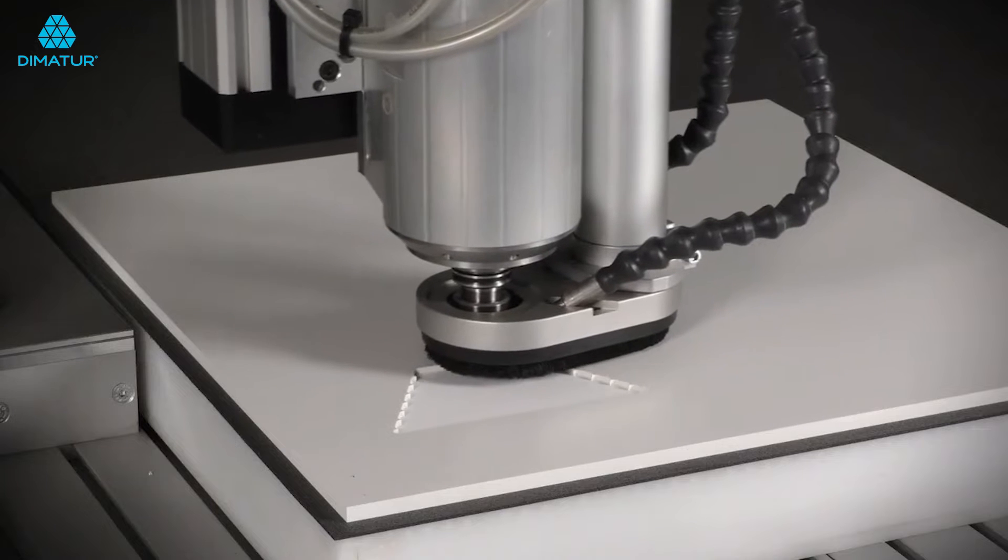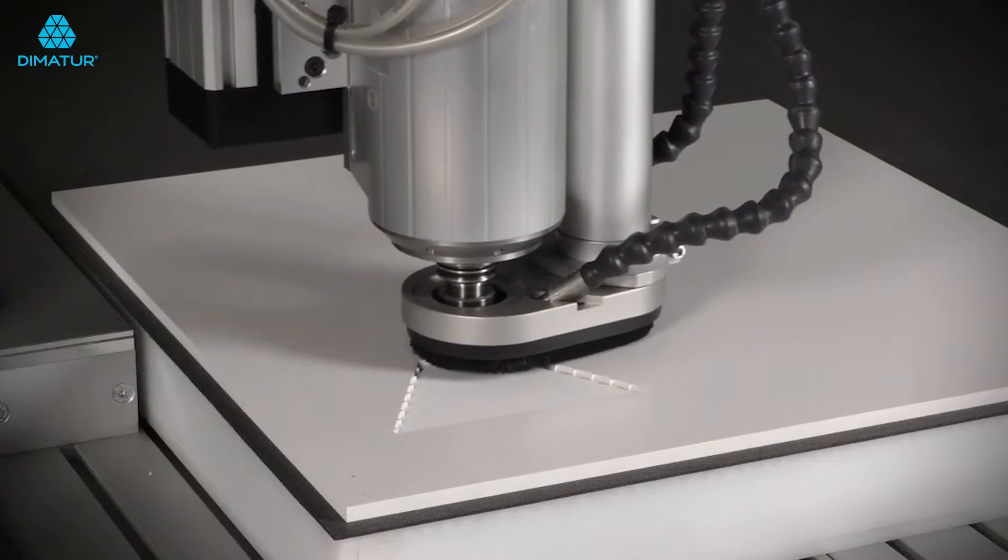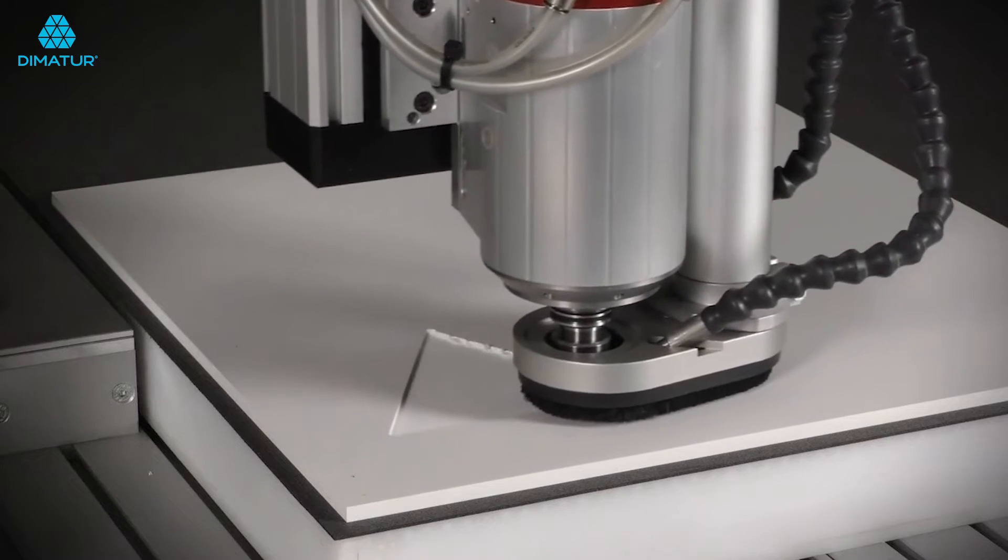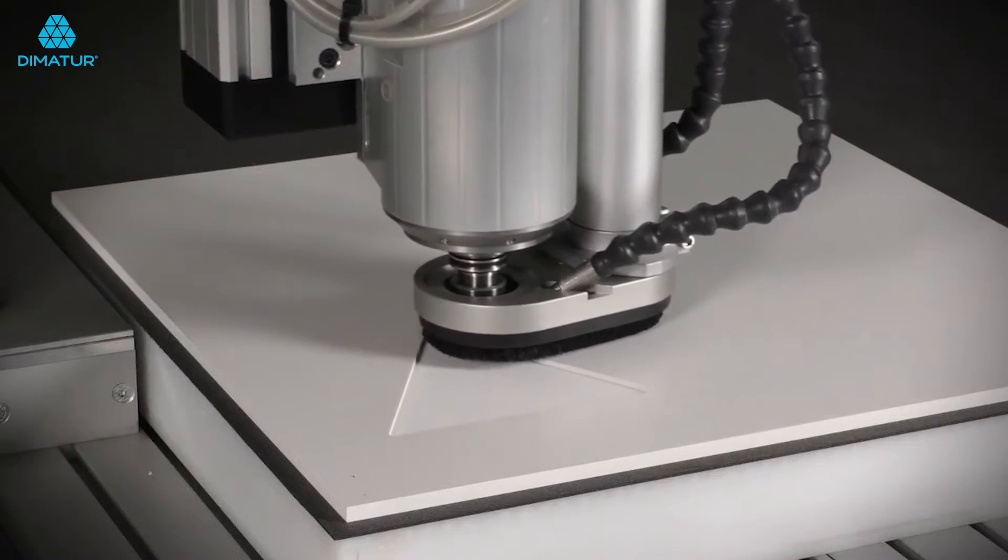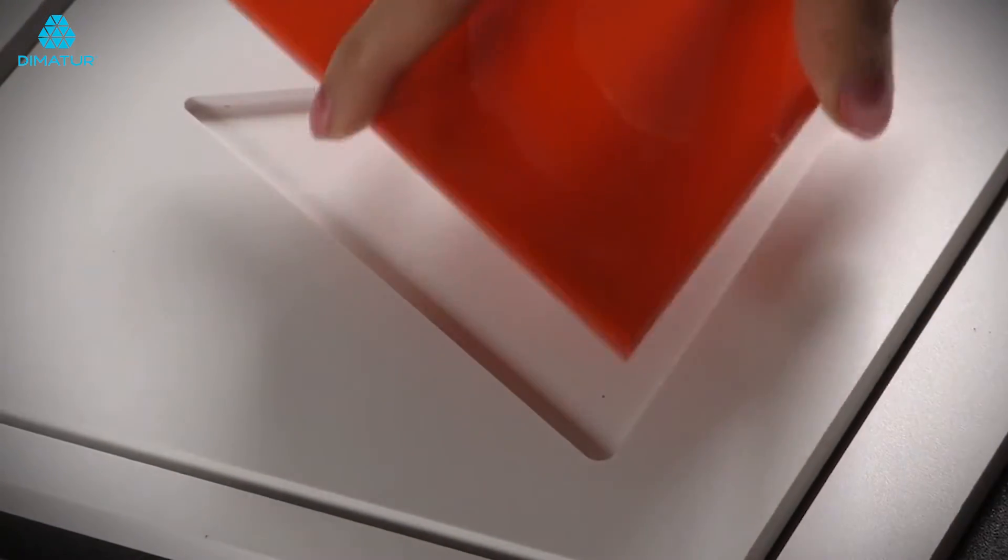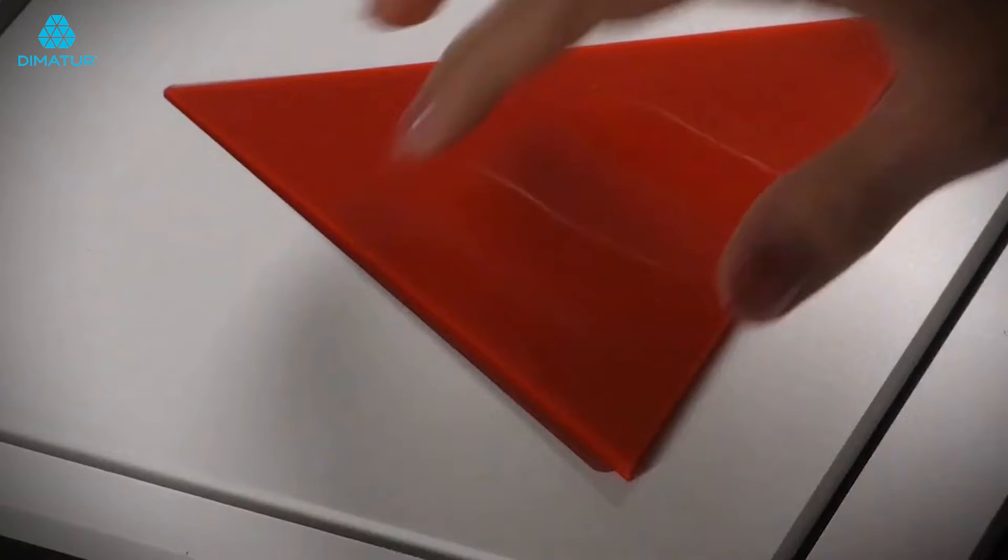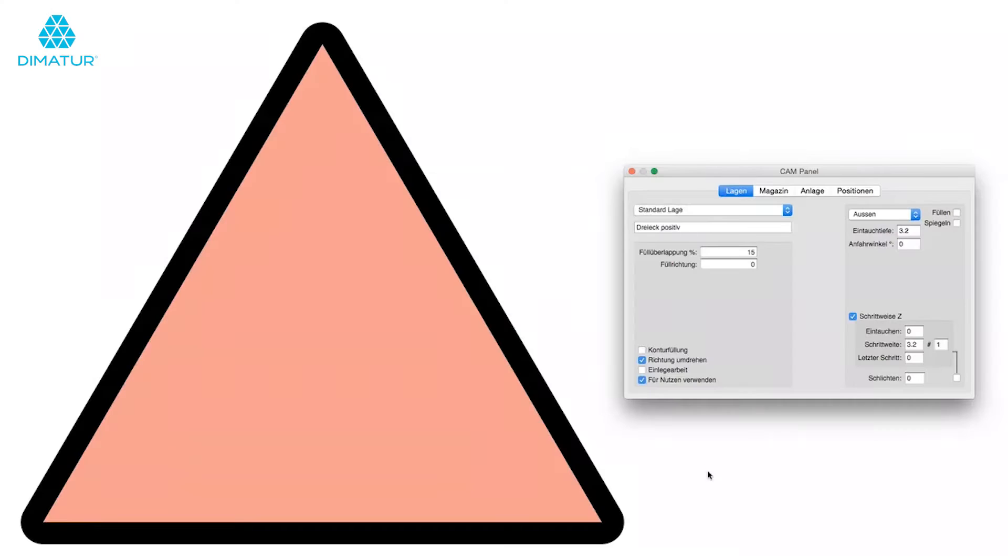Due to the cutter radius, you automatically achieve rounded corners. This means that the positive will not fit into the negative. Thanks to the CAM software special inlay work algorithm, all corners are automatically rounded and the cutter radius corrected with a single click.